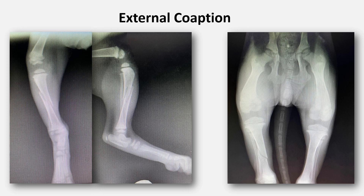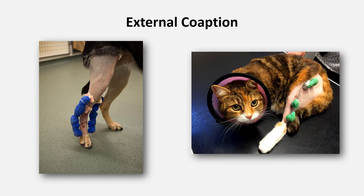ESFs can also be used to cross a joint for the treatment of severe ligament injuries. Both of these individuals had significant multi-ligament injuries treated with trans-articular external skeletal fixators. On the left is a dog with severe tarsal ligament disruption, and here is a cat that had suffered a stifle derangement injury involving both cranial and caudal cruciate ligaments and the lateral collateral ligament.